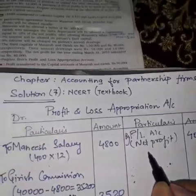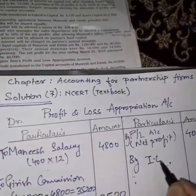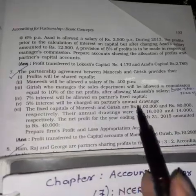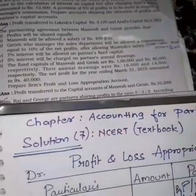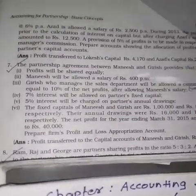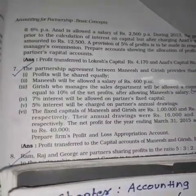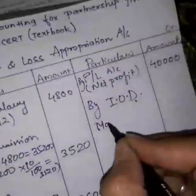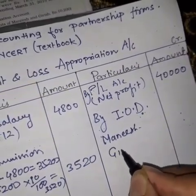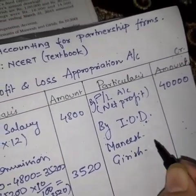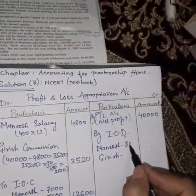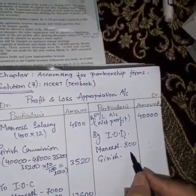In the same manner, we have to calculate interest on drawings also. Interest on drawings is concerned with the credit side of P&L appropriation — the interest on drawings is given by the partners to the firm, so it becomes income for the firm. For Manish and Girish, interest on drawings will be 800 and 700 respectively.